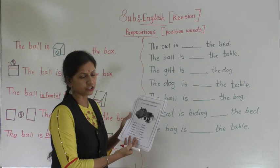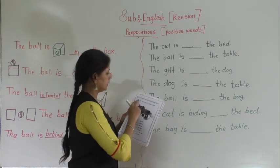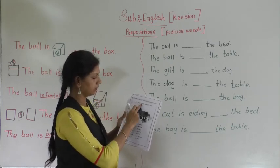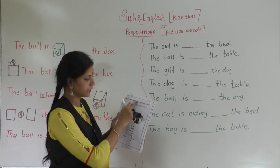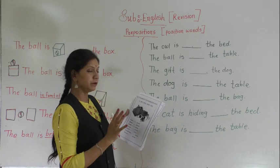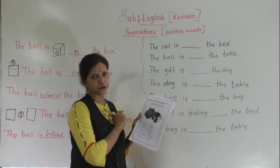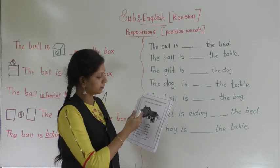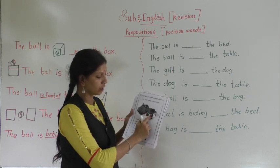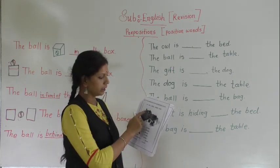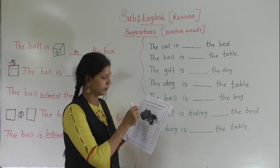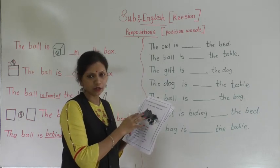After this worksheet, fill in the blanks with the correct prepositions from the box: on, near, next to, behind, under. These prepositions we are going to use for these sentences. Before that, just observe the picture. In this picture there are some animals as well as some things — owl, cat, ball, bag, gift, dog, and one table and bed. Before writing, just observe the picture and see the position of all the things.